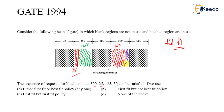And finally 50 — we are left with exactly 50 here, so we can fill it with 50. With first fit method I'm able to satisfy all the requests. The answer is B: first fit but not best fit.